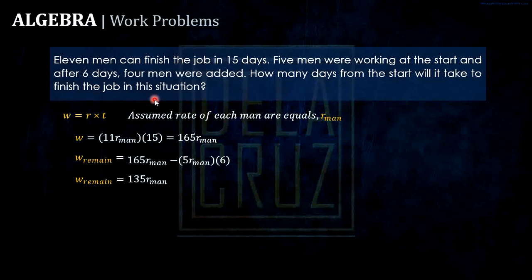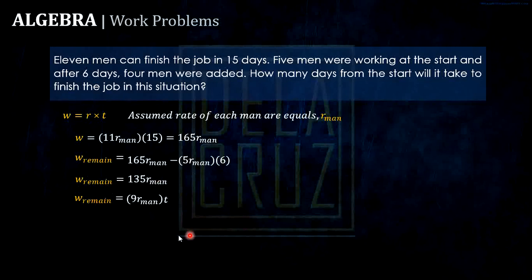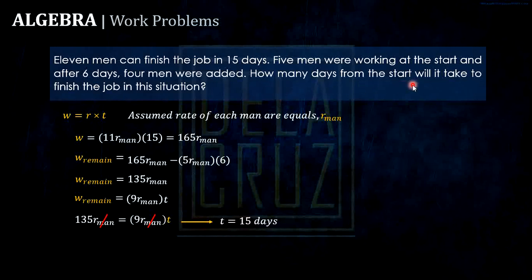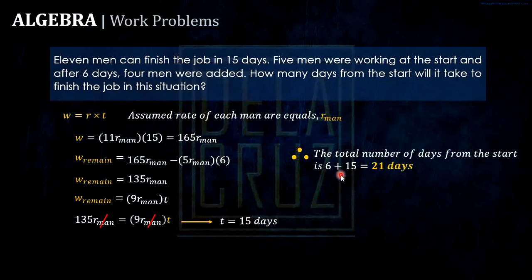This remaining work — 135 times the rate of one man — is completed by the nine men. So 135 rate-of-man equals nine men times the additional time. We can cancel out the rate of man, and solve for the additional time, which is 15 days. But the question asks for total days from the start: six plus fifteen equals twenty-one days.